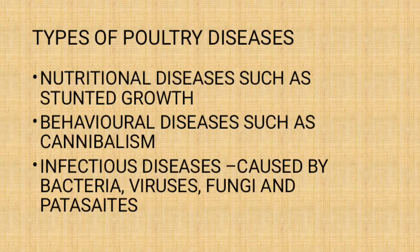Next we have behavioral diseases, where a chicken does not behave normally. This is mostly seen in chickens that are bred indoors. For example, if you use the deep litter or battery cage system, your chicken may develop cannibalism where they start pecking at each other's skin and eating it, eating eggs, or removing feathers from other chickens. Those are behavioral diseases.